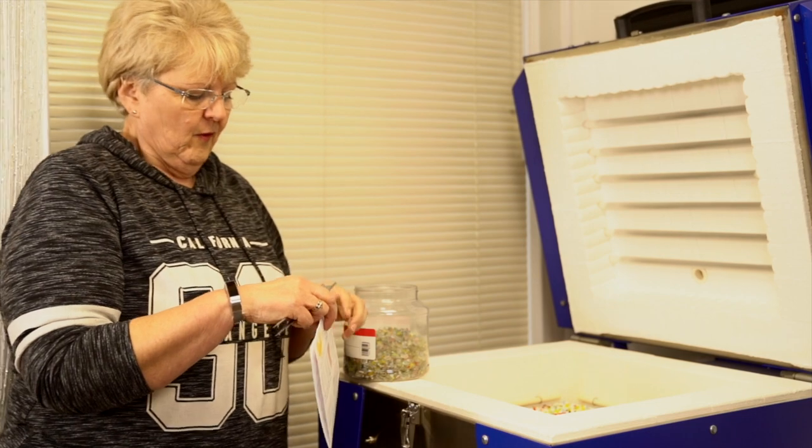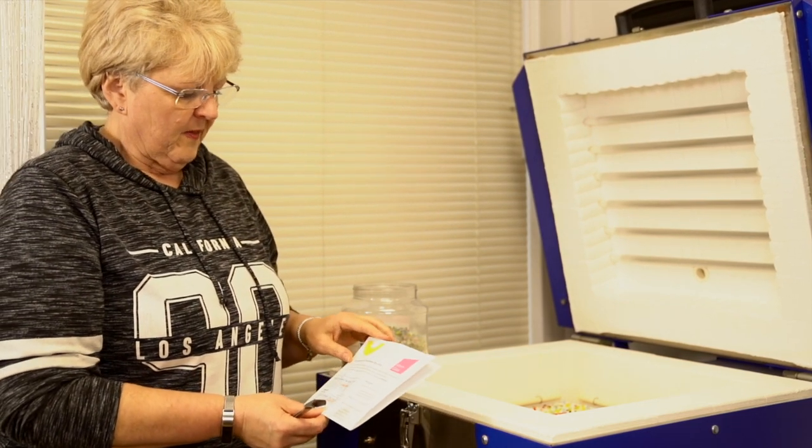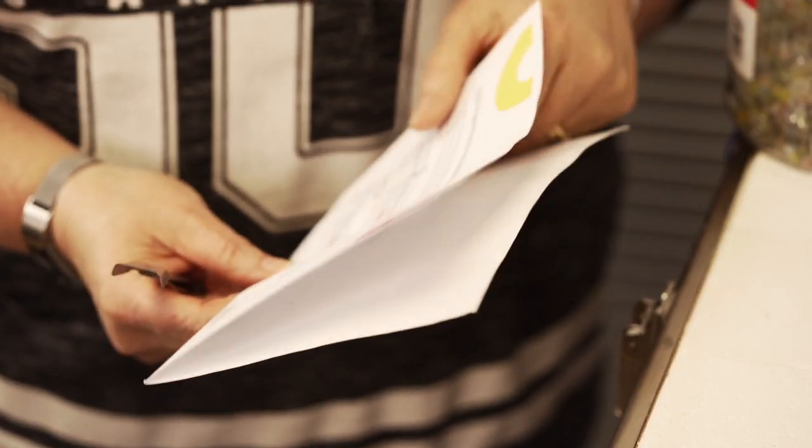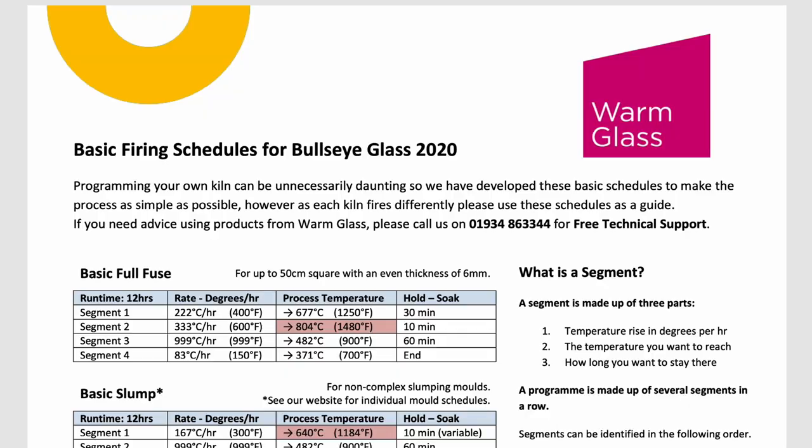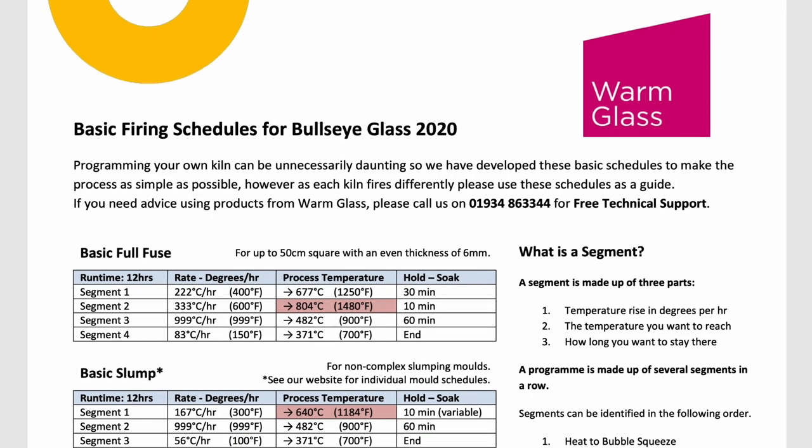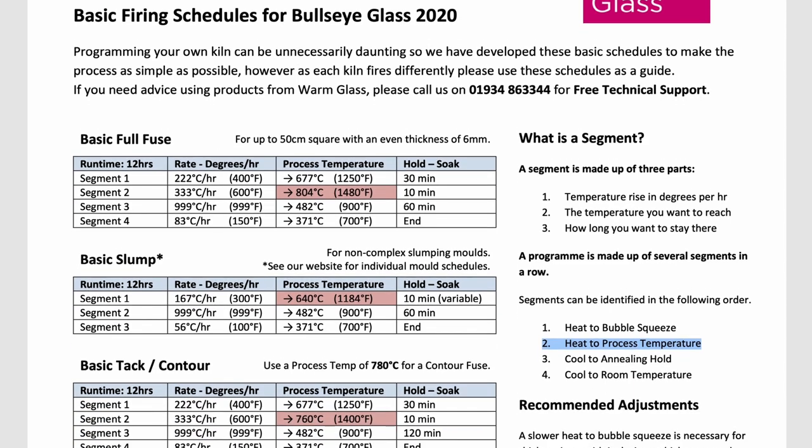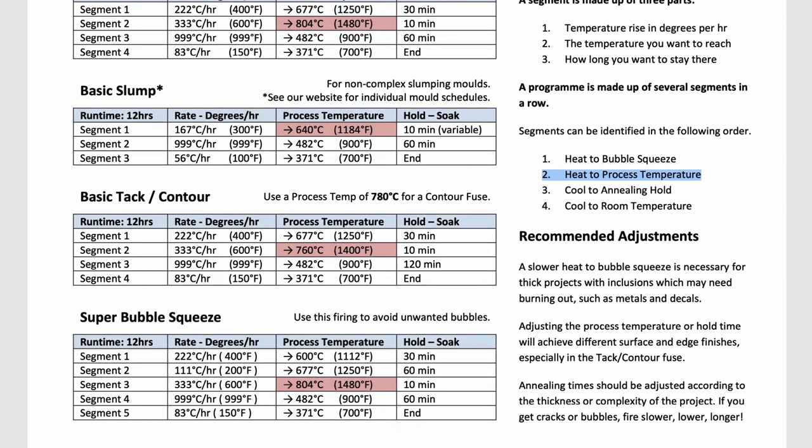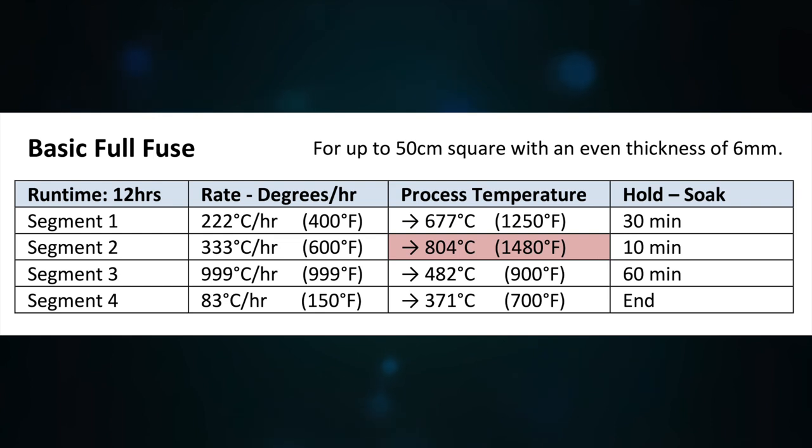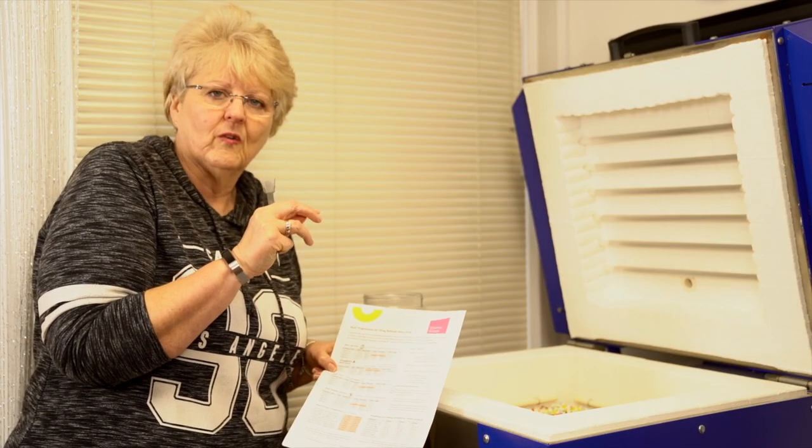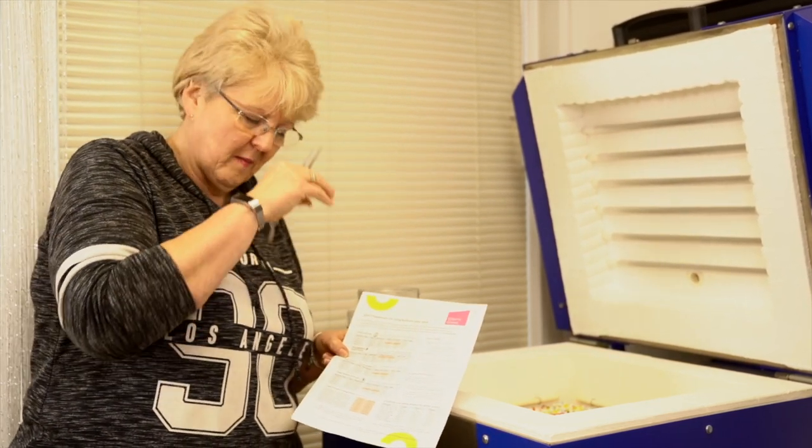So full fusing then. These program sheets or firing schedules are available from the Warm Glass website. You'll notice on here they've got basic full fuse, slumping, basic tack. The basic full fuse program, great for this, except I know with my kiln it needs to be a bit hotter. I like my beads to be nice and round. They will have a flat base, but they're much rounder if you go to a slightly higher temperature.